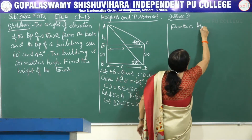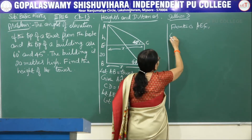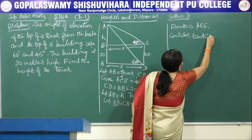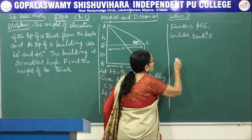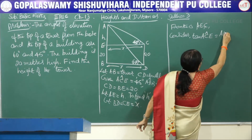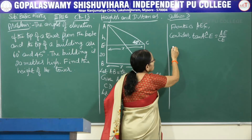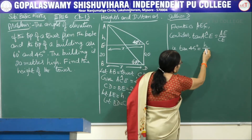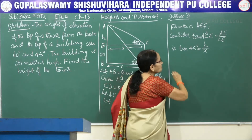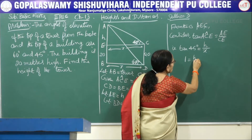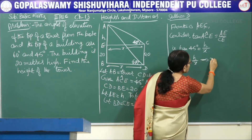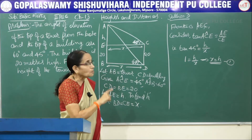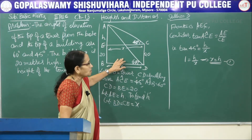From triangle AEC, consider tan of angle ACE. According to the figure it is AE divided by CE. Writing the actual values: tan 45 degrees equals H divided by X. What is tan 45? That is 1. So 1 equals H by X, which implies X equals H. Now take it as Result 1. Our aim is to get the value of H, not X. X comes in between and we will eliminate it in the next step.